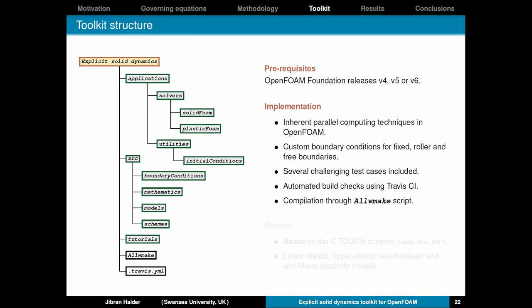Regarding implementation, it makes use of the inherent parallel computing techniques in OpenFOAM, so you can run on a parallel architecture easily. I have included custom boundary conditions for fixed, roller and free boundaries. There are several challenging test cases that you can run to check how robust the code is. It also comes with automated build checks using Travis CI, so whenever we push anything into the GitHub repository, it will be checked on all the platform it is compatible with. And then if you want to compile it, you just run this allWmake script.